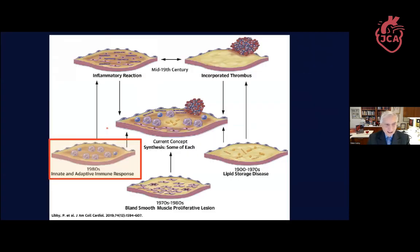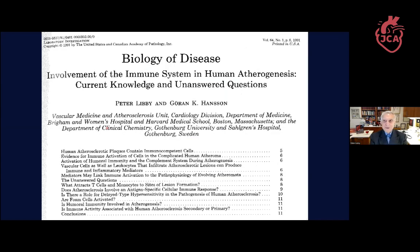In the 1980s, the tools became available — particularly monoclonal antibodies for immunohistochemical staining — that allowed us to really identify what cells were participating in atherosclerosis.